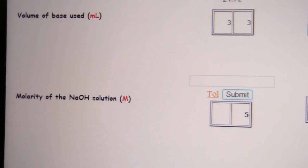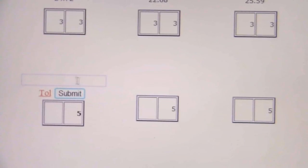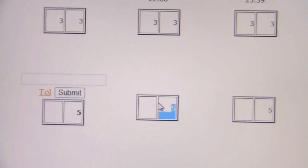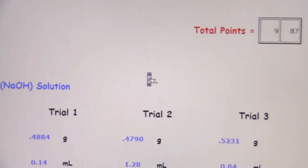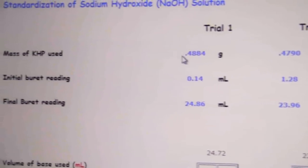All right, so now I've entered in the volumes and it is asking me for the molarity of the sodium hydroxide solution. Okay, so that's something that I need to calculate. The molarity I'm just going to pull up Excel here and the molarity I'm going to calculate based on my mass of KHP.